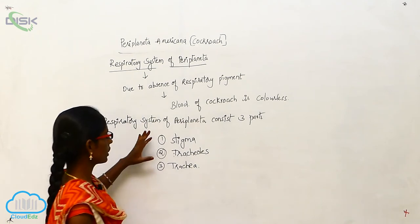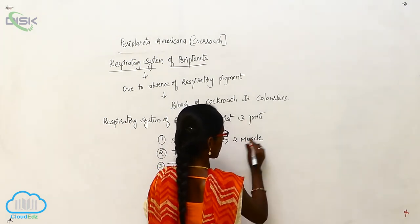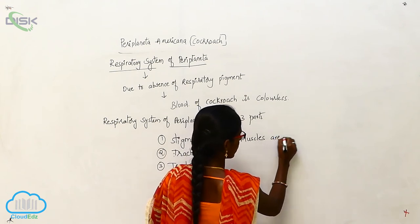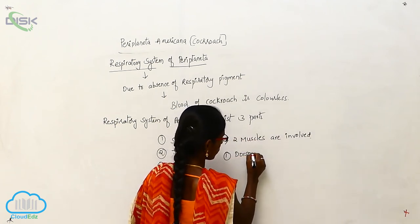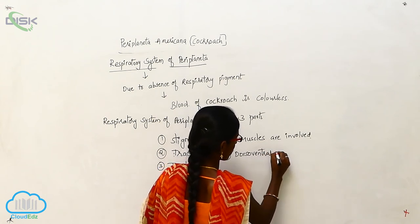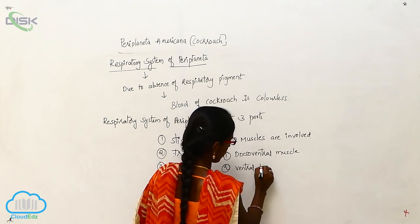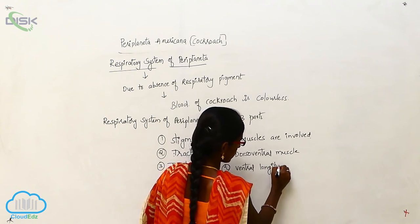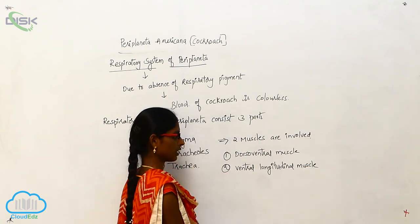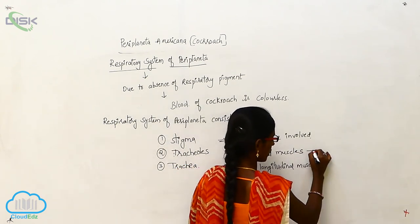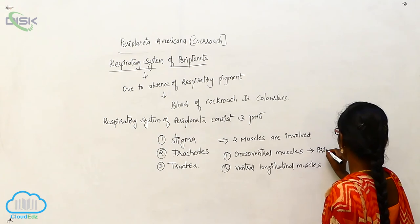In this respiration, two muscles are involved. The first one is the Dorsoventral Muscle and the second is the Ventral Longitudinal Muscle. The principal muscle for respiration is the Dorsoventral Muscle.